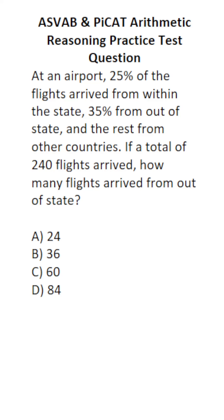This arithmetic reasoning practice test question for the ASVAB and PyCat says: at an airport, 25% of the flights arrive from within-state, 35% from out-of-state, and the rest from other countries. If a total of 240 flights arrived, how many flights arrive from out-of-state?